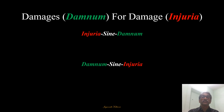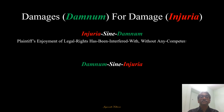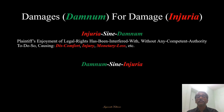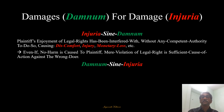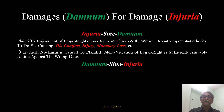What is the difference between those? The first one, injuria sine damnum, says the plaintiff's enjoyment of legal rights has been interfered with without any competent authority to do so, which is causing discomfort, injury, monetary loss etc. And even if no harm is caused to the plaintiff, mere violation of a legal right is sufficient cause of action against the wrongdoer. So the damage is not important — infringement of legal right is important in this first case.